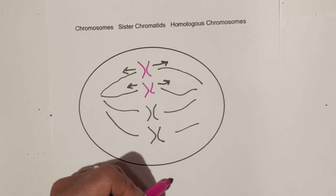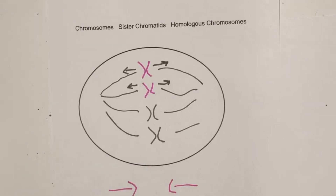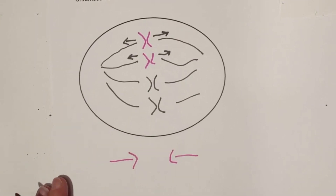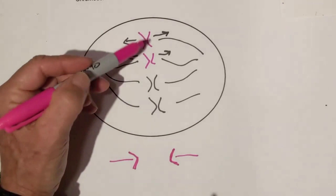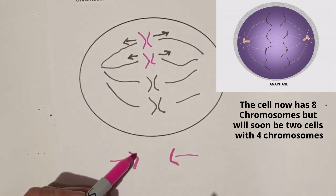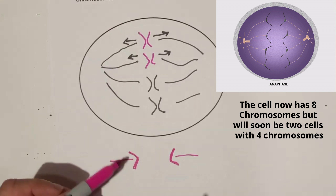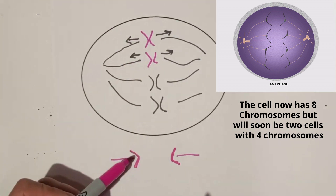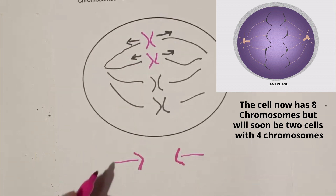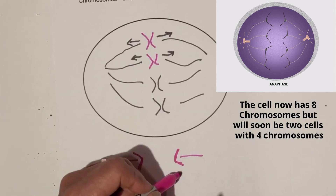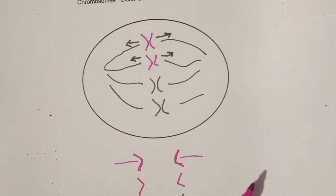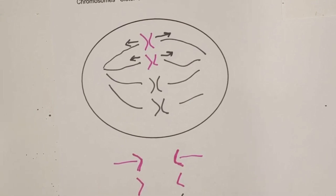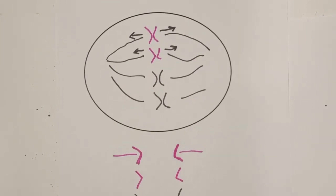When they separate, you get this — attached to the fiber, it looks like an arrow. This is now one half of the original chromosome, but it's still called a chromosome. So in theory we've gone from one chromosome to two chromosomes, because we're creating two cells. Each piece is still called a chromosome.